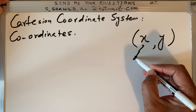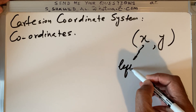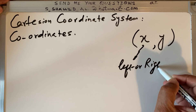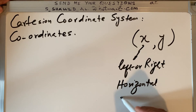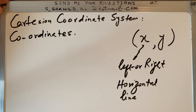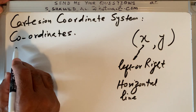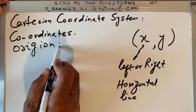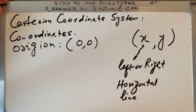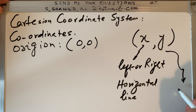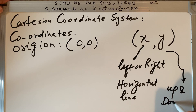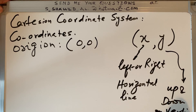x represents how far the point is left or right — on the x-axis, or horizontal line. y represents how far the point is up and down, on the vertical line.